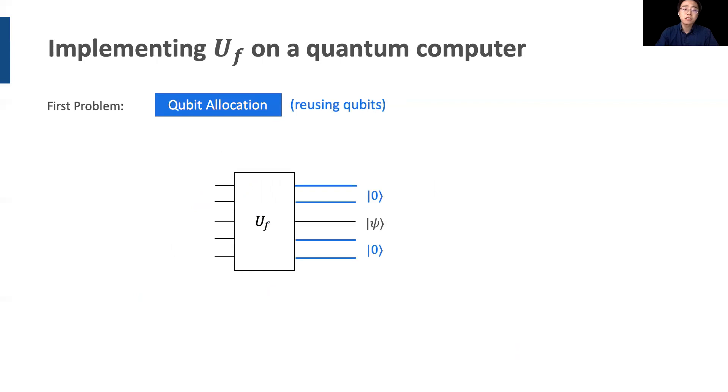Qubit allocation is also about reusing qubits. For example, at the end of U sub F, if some qubits reset to 0, then we are free to reuse them for future computation. Pictorially shown here for the qubits indicated by the blue lines, an intelligent qubit allocator must know how to strategically distribute those reusable qubits.